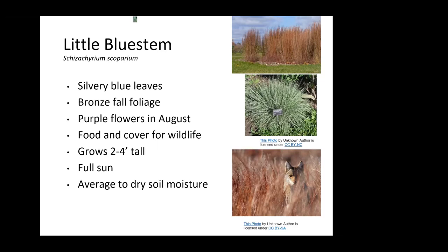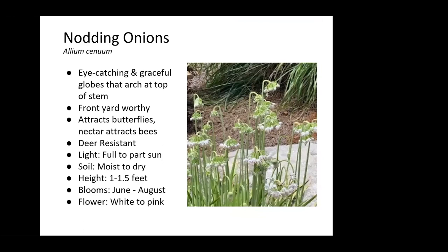Nodding wild onions are worthwhile to plant in the front yard — they are deer resistant, have an extended bloom time, and do self-propagate a little bit, which I've taken advantage of to plant them in other areas of my garden. The bees really like them a lot, as well as swallowtail butterflies.